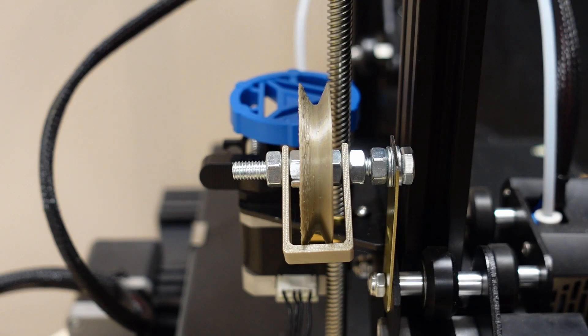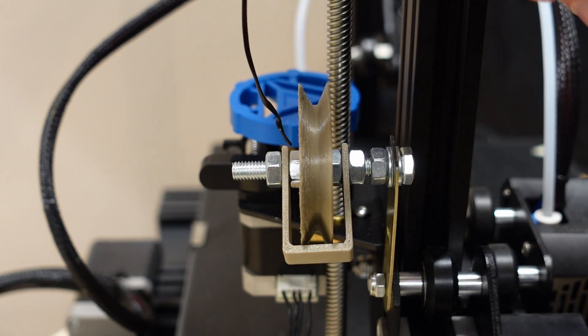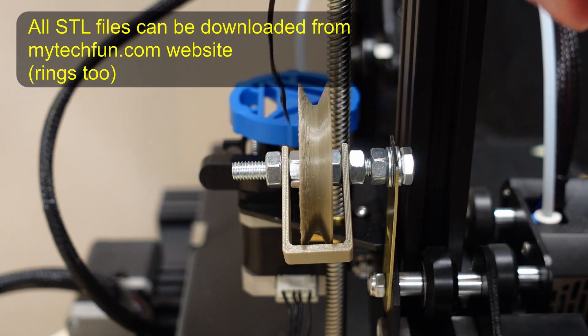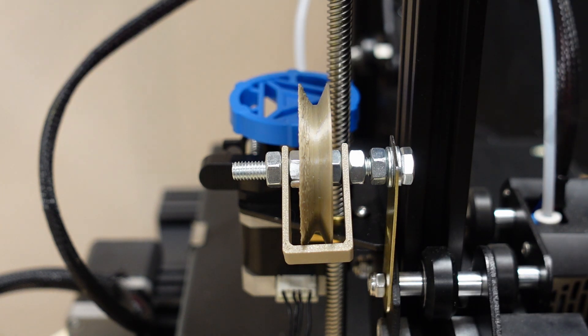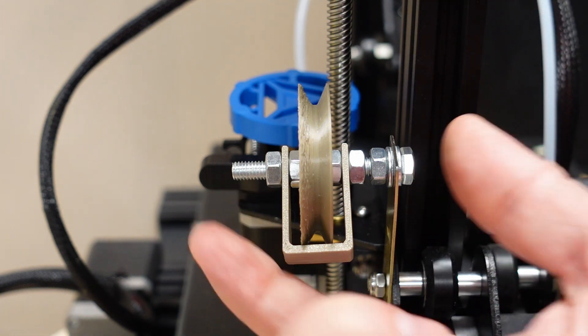So one more time, for more comfortable assembling, instead of these two inner nuts, use some kind of ring with six millimeter inner diameter, and it will be much easier to assemble this.